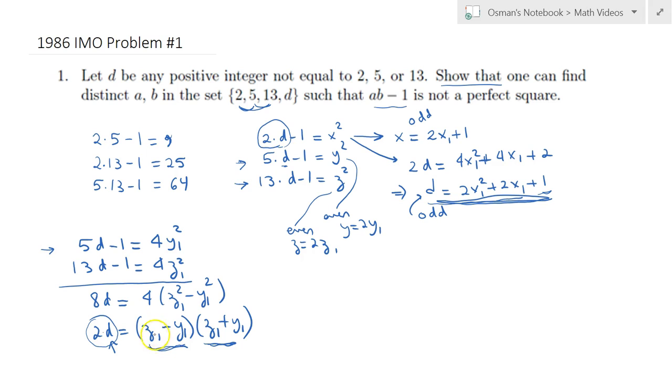For instance, z₁ and y₁ are both odd. As a result, z₁ minus y₁ is even and z₁ plus y₁ is even as well. So you have an even expression here and an even one here. So times 2 times 2.